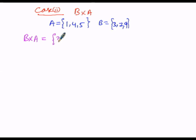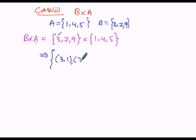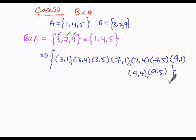First, we find ordered pairs with 3: (3,1), (3,4), (3,5). Next, ordered pairs with 7: (7,1), (7,4), (7,5). Similarly, ordered pairs with 9: (9,1), (9,4), (9,5). So these are the ordered pairs. The first element of B cross A is (3,1), the second is (3,4), the third is (3,5), and so on through (9,5) — giving 3 into 3, that is 9 elements in B cross A.